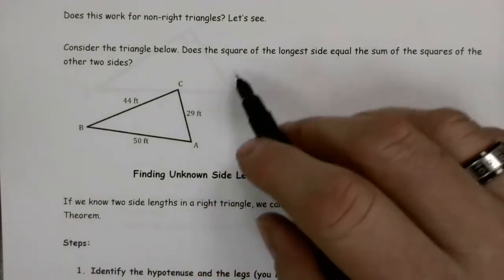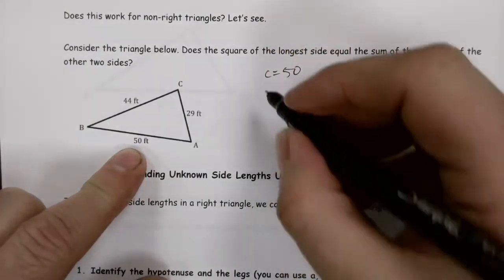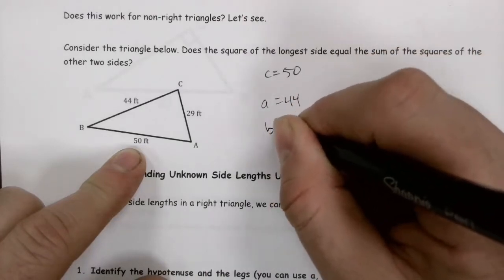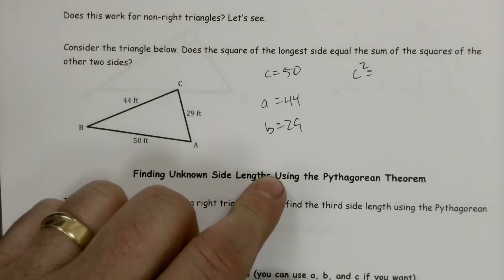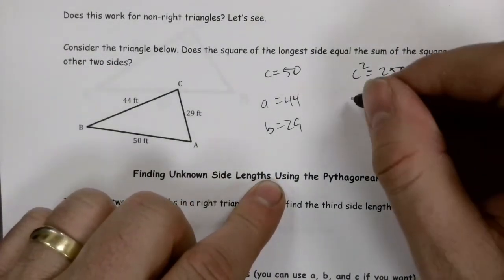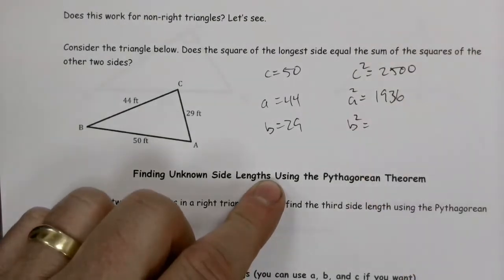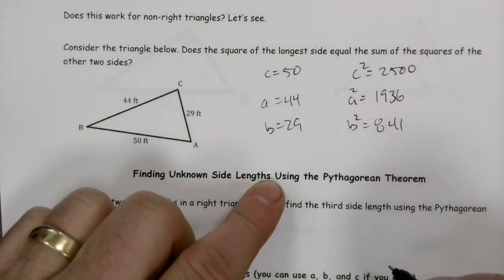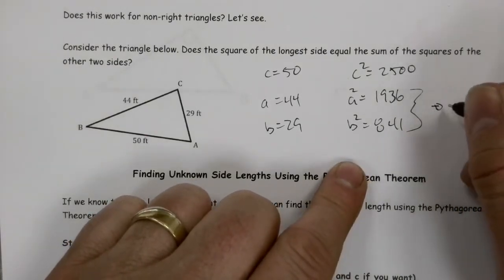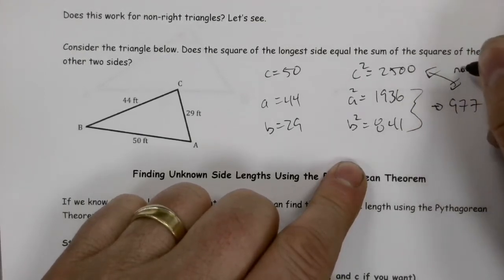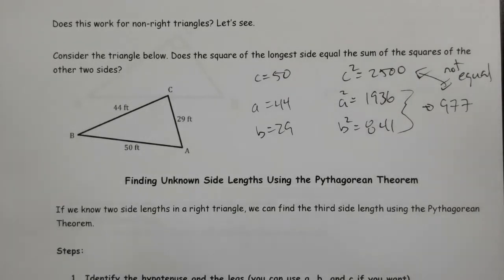Consider this triangle: the longest side C is 50, A is 44, and B is 29. Fifty squared equals 2,500. Forty-four squared is 1,936, and twenty-nine squared is 841. Adding 1,936 plus 841 gives 2,777 — and these are not equal to 2,500. So no, it doesn't work like that. If this isn't a right angle triangle, this rule doesn't apply. Remember: the Pythagorean Theorem means the sum of the squares of the legs equals the square of the hypotenuse. If it's not a right angle triangle, there is no hypotenuse.